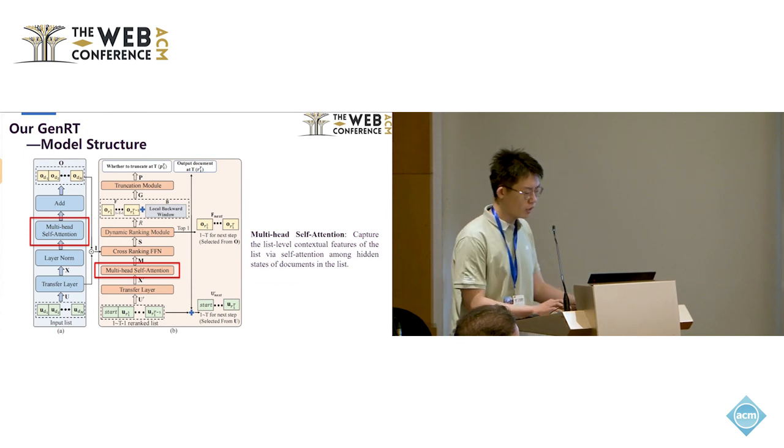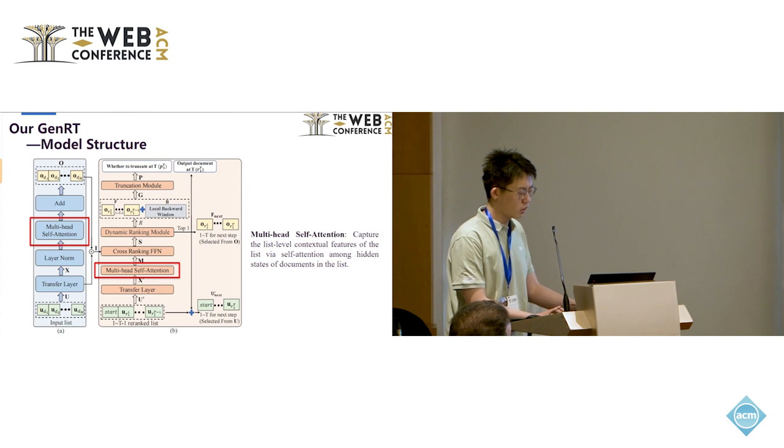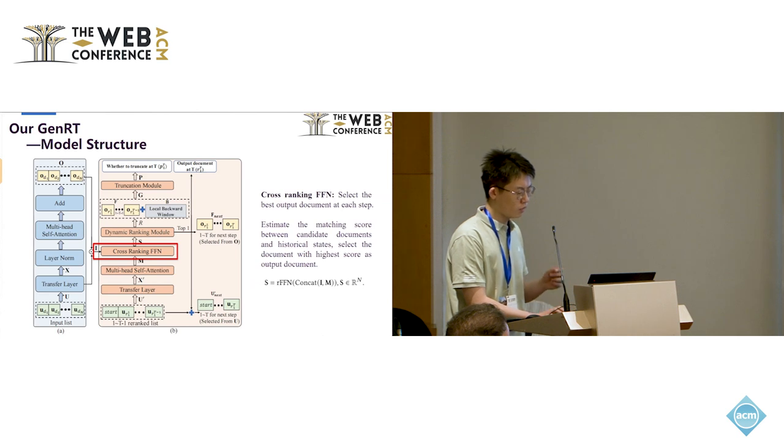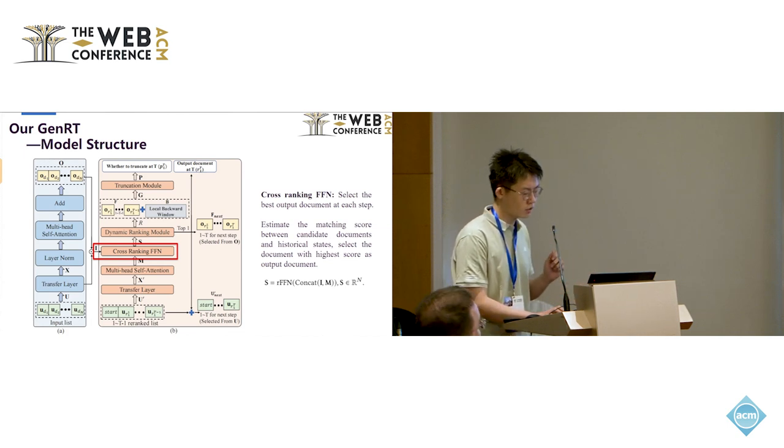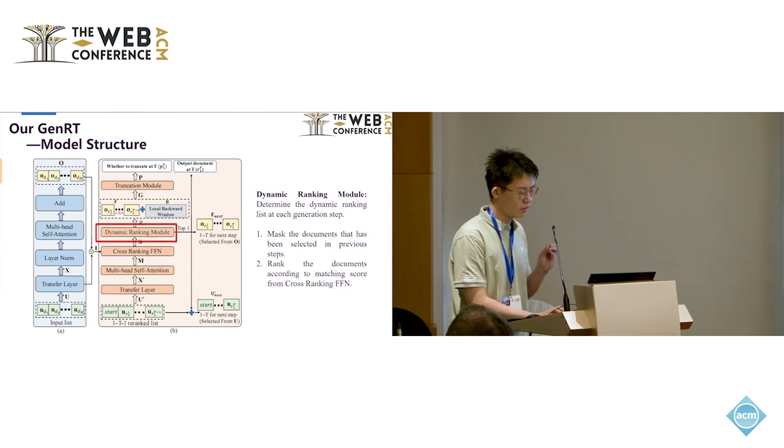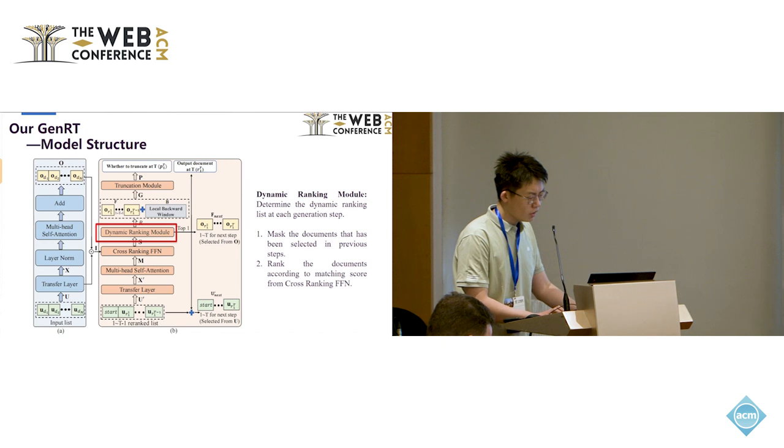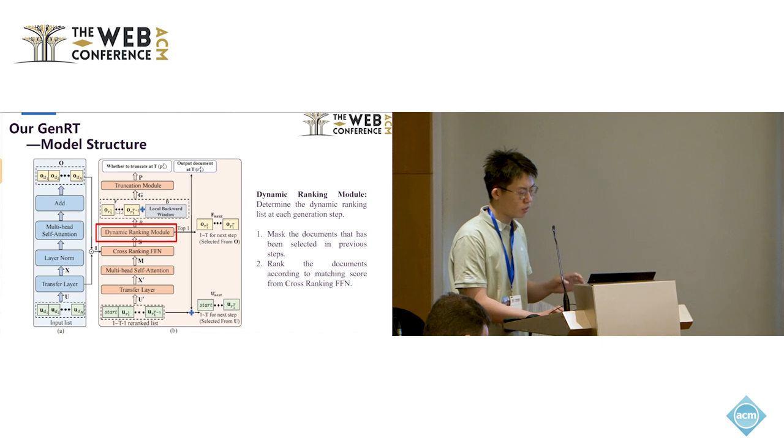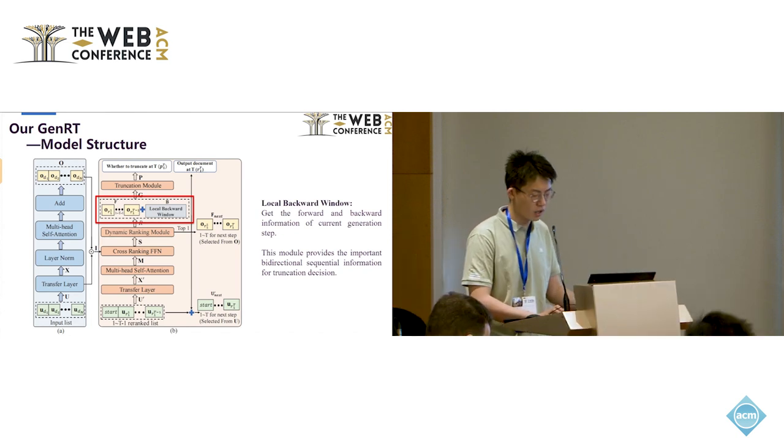Then, the multi-head attention is used to capture the list level features of the input list by attention among hidden states of the document in the list. These list level features are shared between ranking and truncation tasks. Cross-ranking FFN is used to select the best output document at each generation step. It estimates the matching score between candidate documents and the historical hidden states at each step and select the document with the highest score as the output document. The dynamic ranking model is used to determine the dynamic ranking list at each generation step. It masks the document that has been selected in previous steps and ranks the documents according to the matching score from ranking FFN.